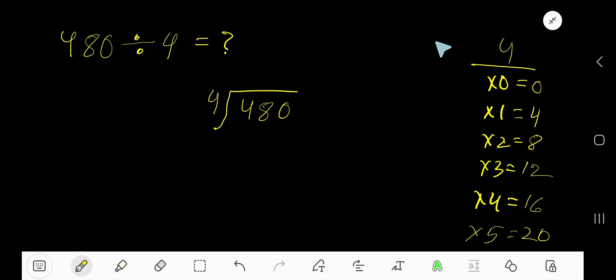480 divided by 4. Here 4 is a divisor, so we need the multiplication table of 4. 4 times 0 is 0, 4 times 1 is 4, 4 times 2 is 8, 4 times 3 is 12. To find the multiplication table of 4, just add 4 to the previous step: 0 plus 4 is 4, 4 plus 4 is 8, 8 plus 4 is 12.